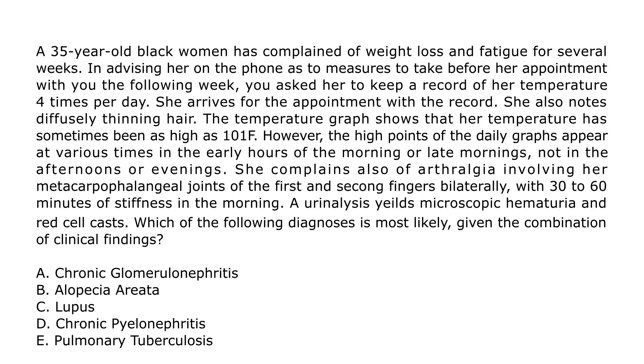Clinical vignette: A 35-year-old Black woman complains of weight loss and fatigue for several weeks. She kept a temperature log showing readings as high as 101°F, peaking in early morning or late morning — not afternoons or evenings. She notes diffusely thinning hair and complains of arthralgia in the first and second fingers bilaterally with 60 minutes of morning stiffness. A urinalysis shows microscopic hematuria and red cell casts. What is the most likely diagnosis?